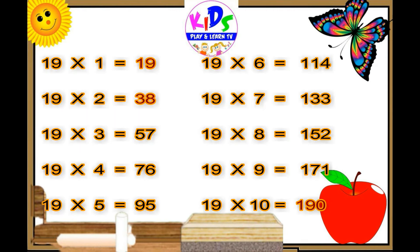Nineteen ones are nineteen. Nineteen twos are thirty-eight. Nineteen threes are fifty-seven. Nineteen fours are seventy-six. Nineteen fives are ninety-five.